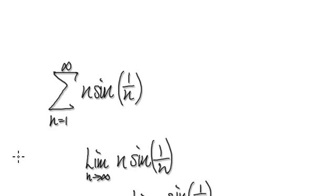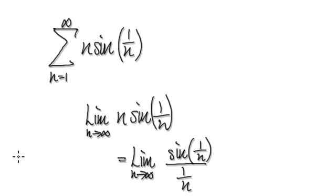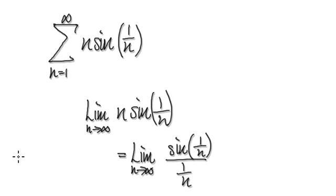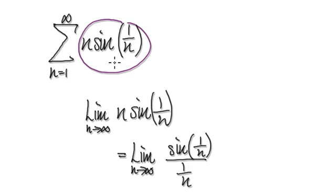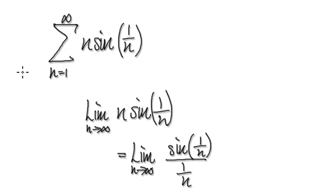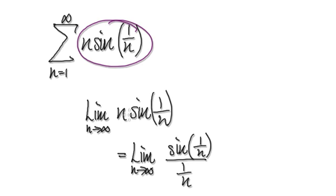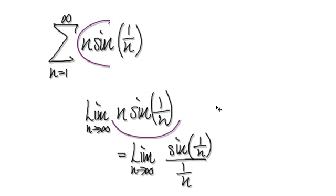So to do this, in order for any series to converge, the limit must equal zero as n tends to infinity. The limit of this must equal zero in order for any series to converge. So the first thing we should do is to make sure that the limit of this equals zero.